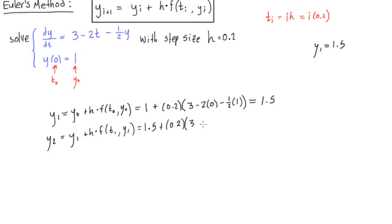So we have 3 minus 2 times t1. Well, t1 is going to be 1 times 0.2, so this will actually be times 0.2 as well, minus 1 half times 1.5. All right, this 1.5 is our y1, which we've already calculated up here. So now when we go and calculate this, punch all this into your calculator, you should get this is all equal to 1.87.